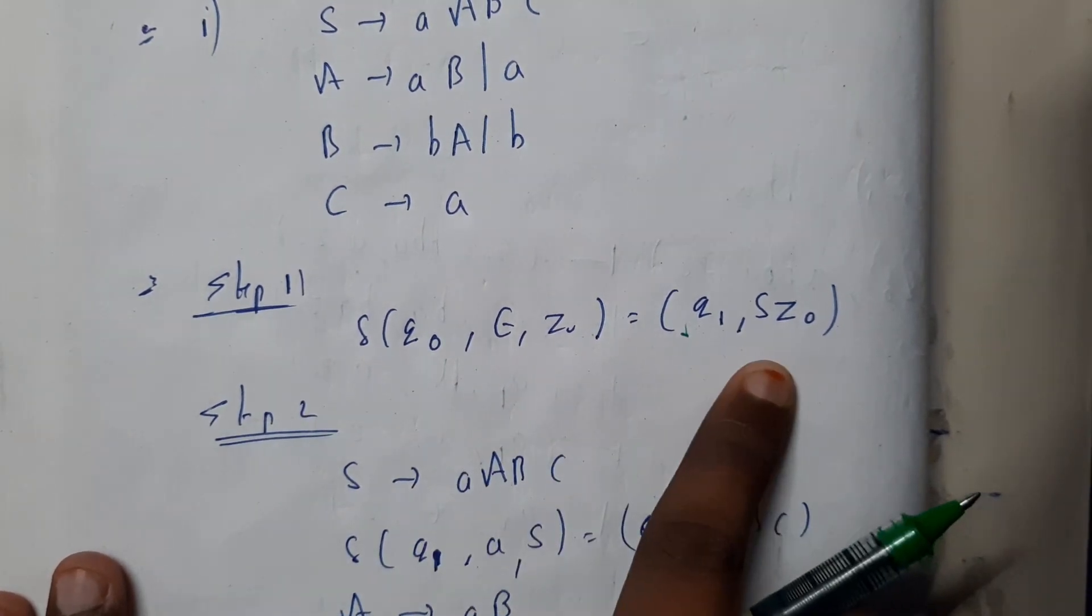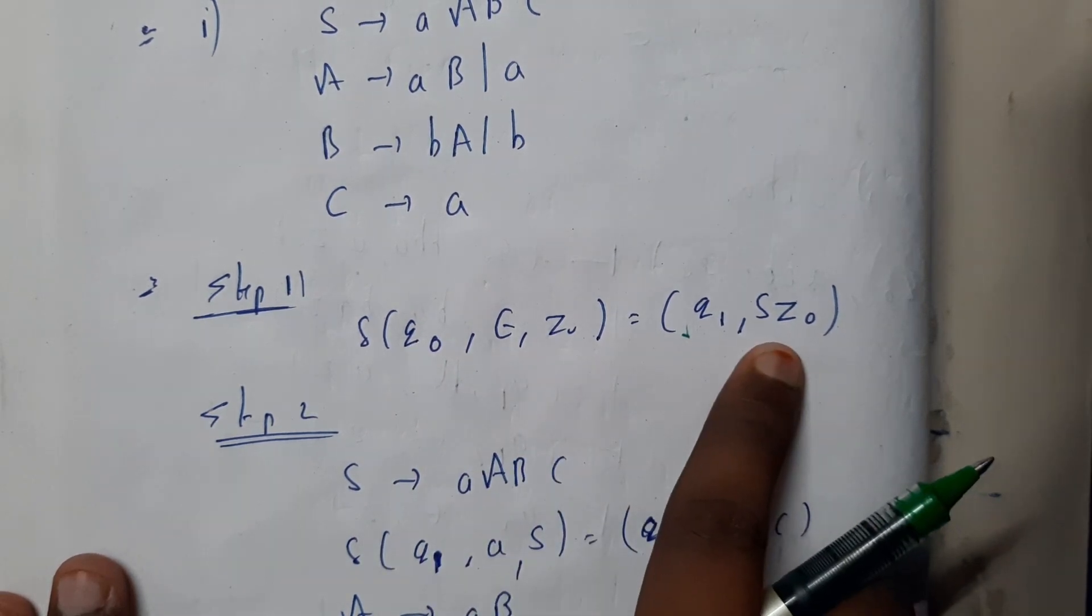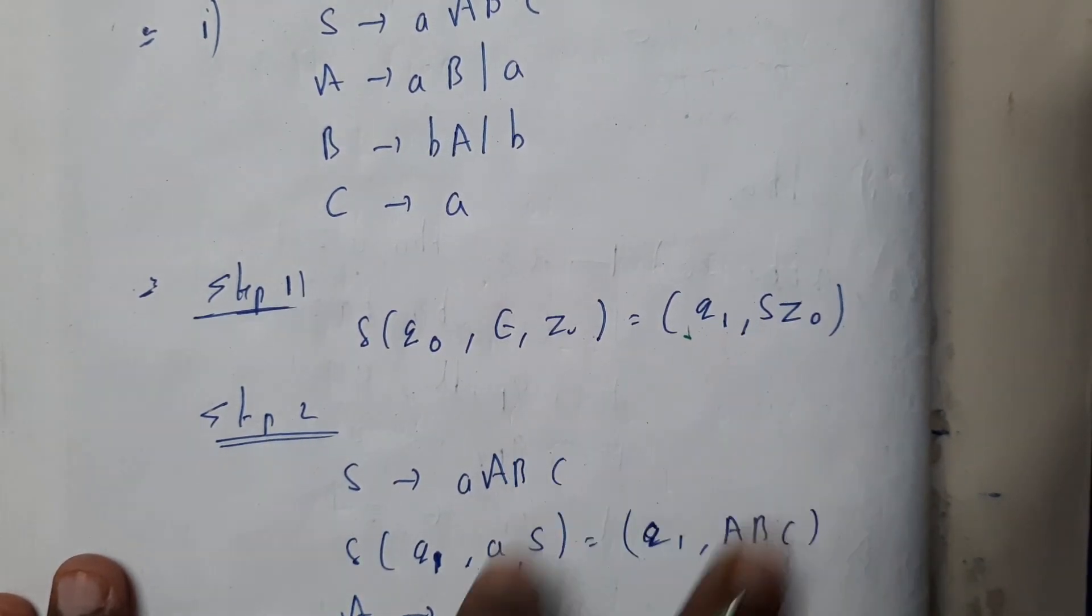Q naught, epsilon, Z naught, we will be pushing a letter S Z naught. So that is nothing but we have started our process.